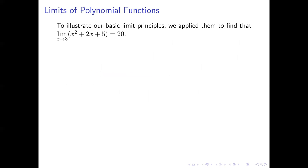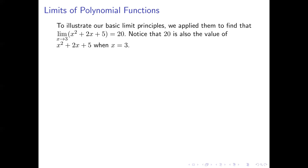Let's begin by looking at the substitution method for limits. Going back to our example from last time, we found the limit as x approaches 3 of x squared plus 2x plus 5. Using the constant rule, the identity rule, and our arithmetic combination rules for limits, that limit was equal to 20. You might also have already noticed that the value of that function when x equals 3 is also 20 — plug 3 in for x, calculate the function value, you'll get 20.